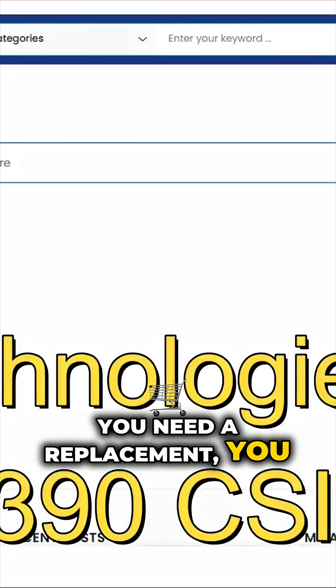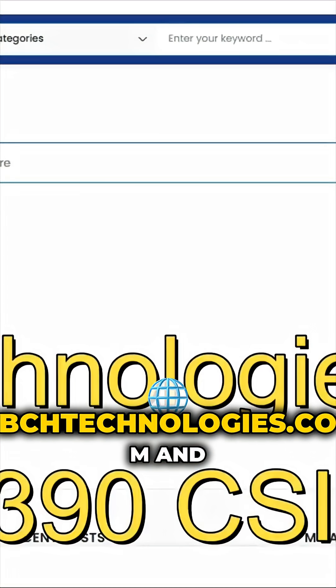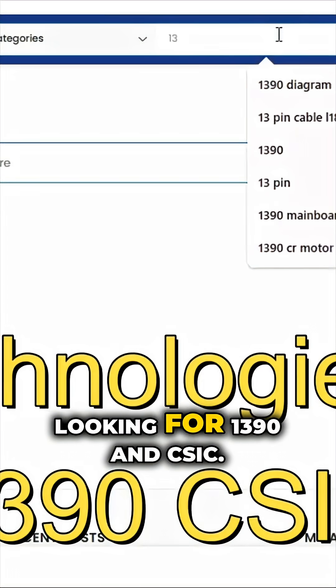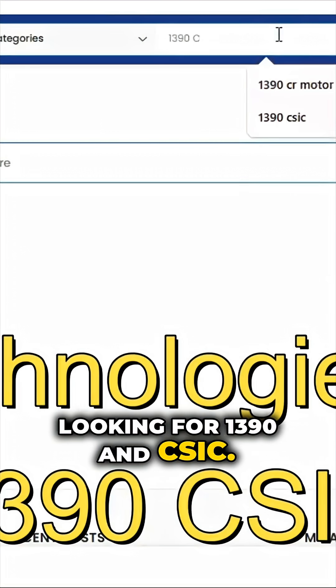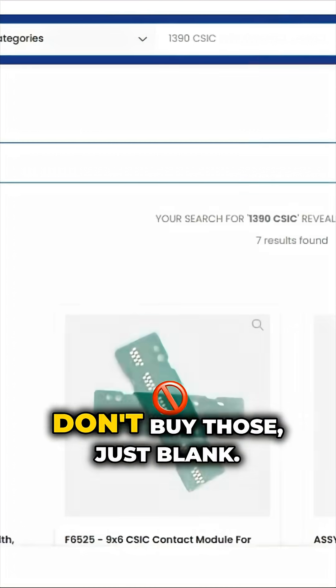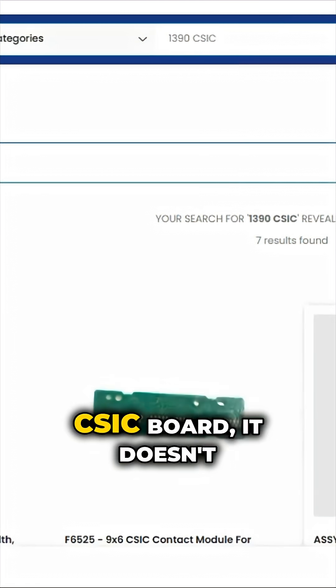If you need a replacement, you can go to bchtechnology.com and look for 1390 and CSIC. Don't buy those just blank CSIC boards.